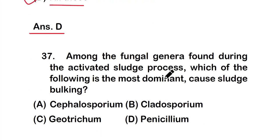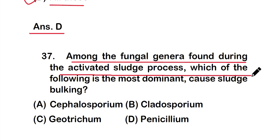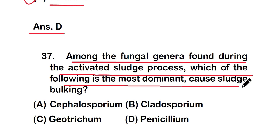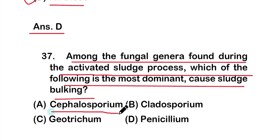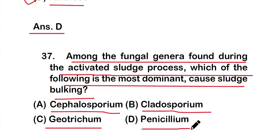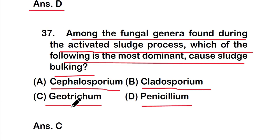Question number 37: Among the fungal genera found during the activated sludge process, which of the following is the most dominant cause of sludge bulking? Options: A) Cephalosporium, B) Cladosporium, C) Geotrichum, or D) Penicillium. The right answer is option C — Geotrichum. This fungal genus found during the activated sludge process is the most dominant cause of sludge bulking.